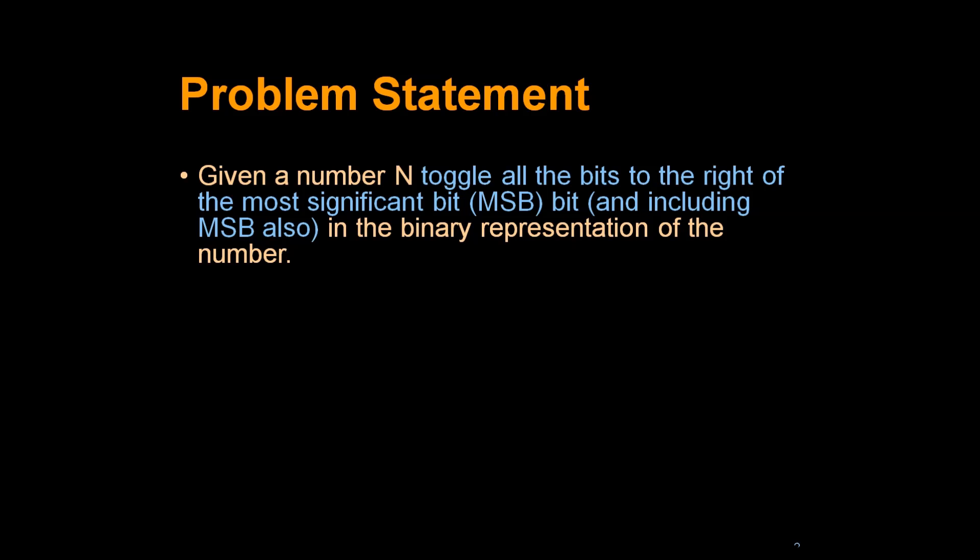Let's look at the problem statement. Given a number N, we have to toggle all the bits to the right of the most significant bit MSB, including MSB also, in the binary representation of the number.